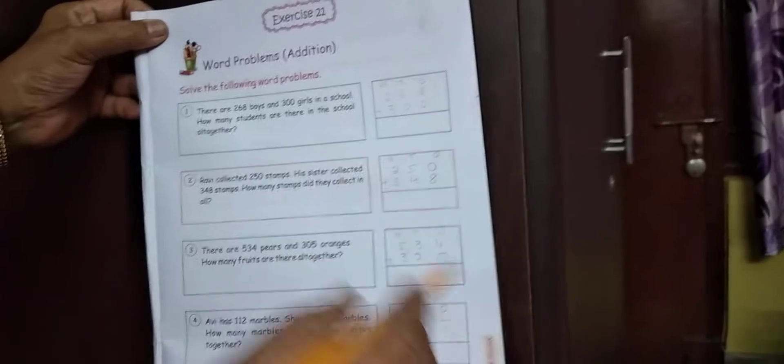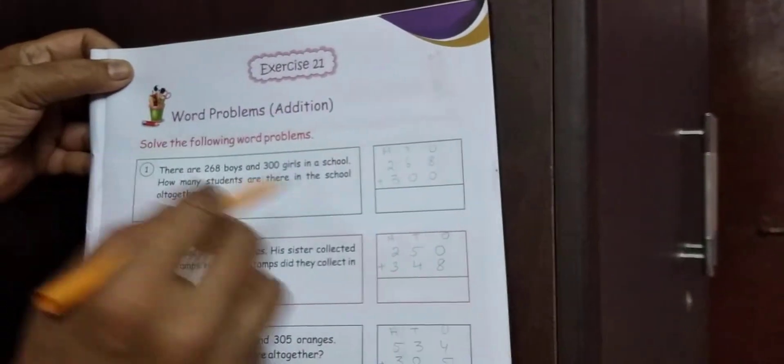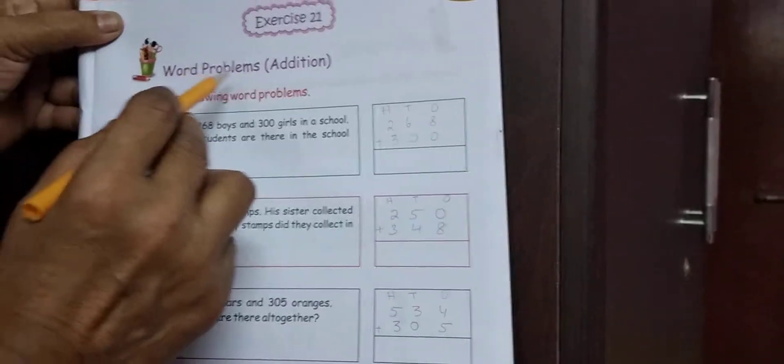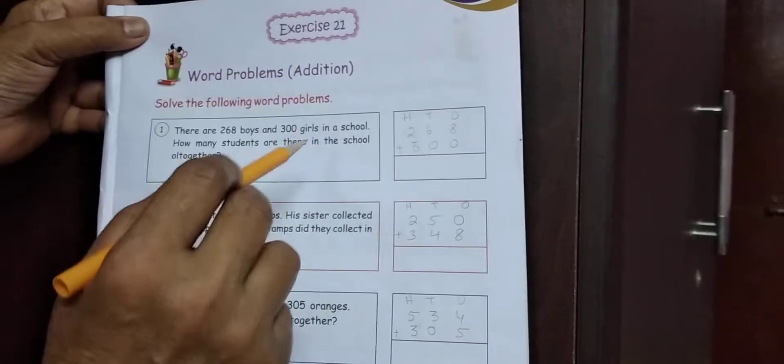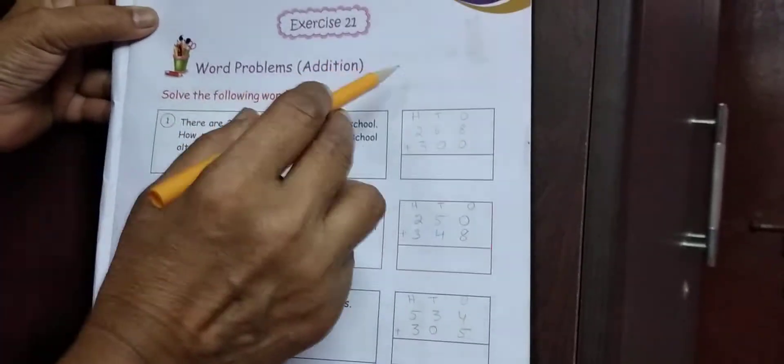Students, I will be starting now. Mental math. Student, very, very carefully listen to me and look at the book, exercise 21 and page number 25. Very, very carefully look at the page. Students, look, word problems, addition.